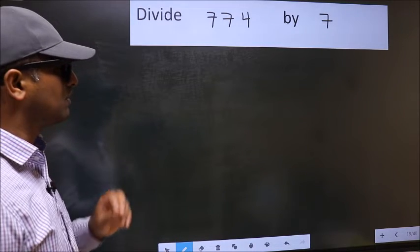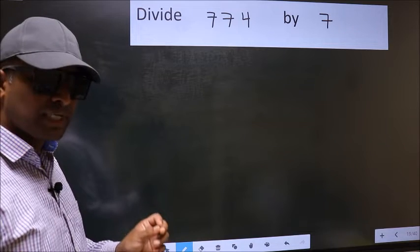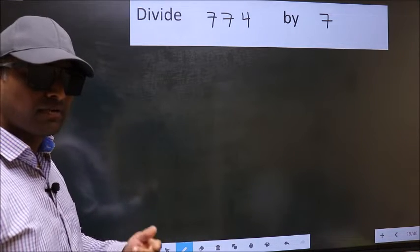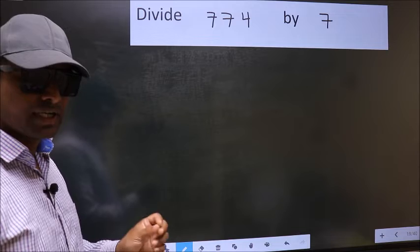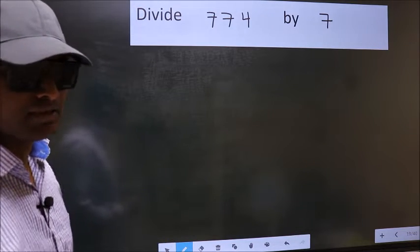Divide 774 by 7. While doing this division, many make this mistake. What is the mistake that they make? I will let you know. But before that, we should frame it in this way.